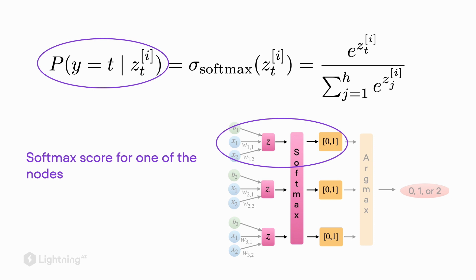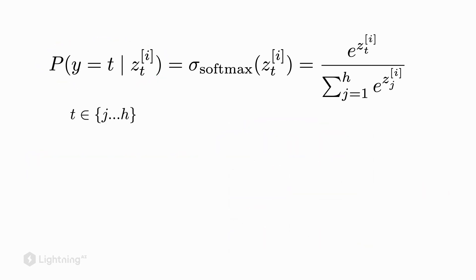If we look at the first class label — if class label t equals zero — then we might be looking at the first part of the graph here. Softmax regression works for an arbitrary number of labels, so t can be any number between zero and 99 if we have 100 classes, or even larger.